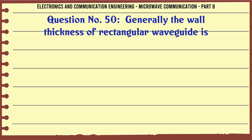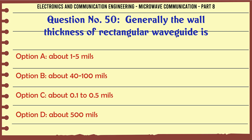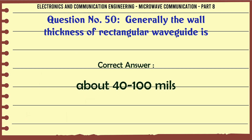Generally, the wall thickness of a rectangular waveguide is — A. About 15 mils, B. About 40–100 mils, C. About 0.1 to 0.5 mils, D. About 500 mils. The correct answer is about 40–100 mils.